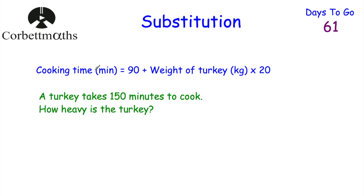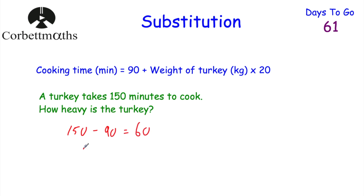Now for the next part, using the same formula — cooking time equals 90 plus weight times 20 — we're told a turkey takes 150 minutes to cook. How heavy is the turkey? One approach is to work backwards. We know we multiply the weight by 20 and add 90, so we take 150 and subtract 90 to get 60, then divide by 20. 60 divided by 20 equals 3, so the turkey weighs 3 kilograms.